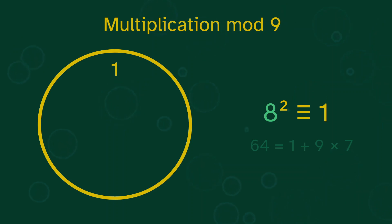8 squared is 1, so 8 must be halfway around. If we do it twice, we get back to 1. Then 2 cubed is 8, so 2 must be a third of the way to 8. And then multiplying by 2, we get 4, 7, and 5.